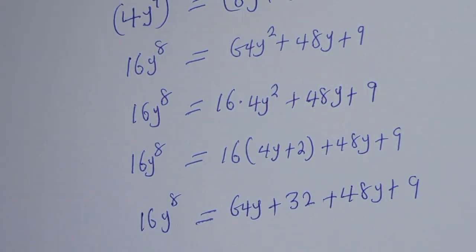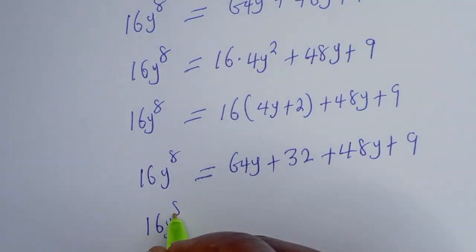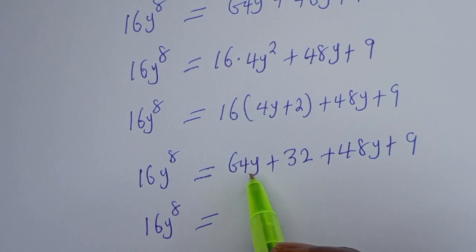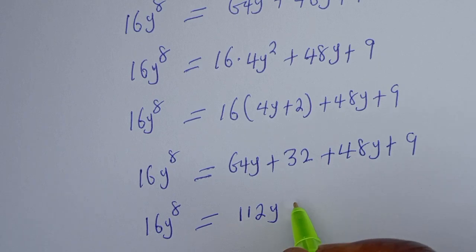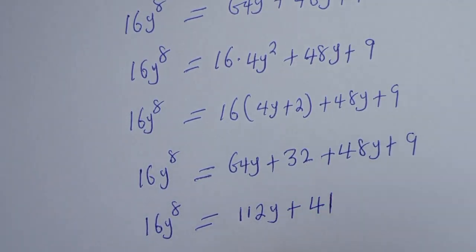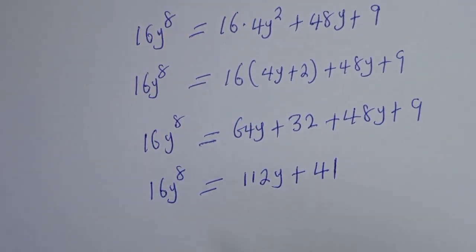This simplifies to 16y to the power of 8 equals 64y plus 48y, that is 112y, plus 32 plus 9 — that is 41. So 16y⁸ equals 112y plus 41.